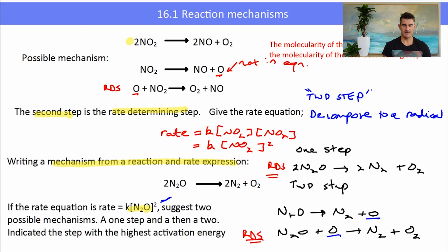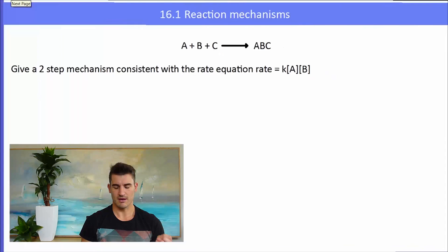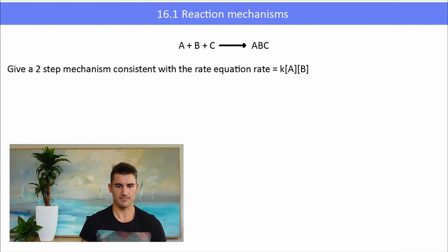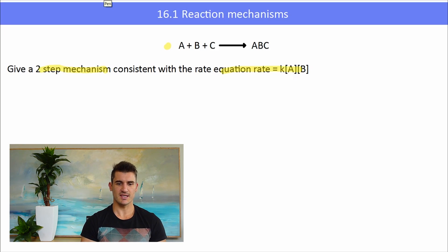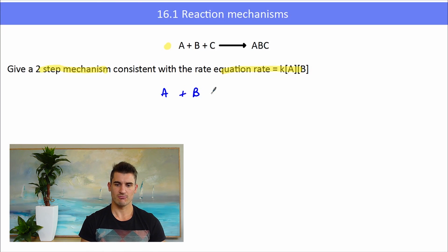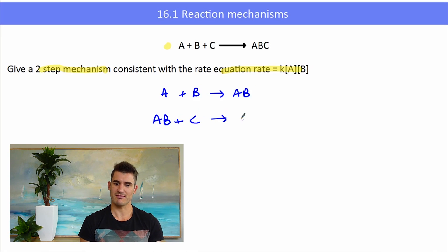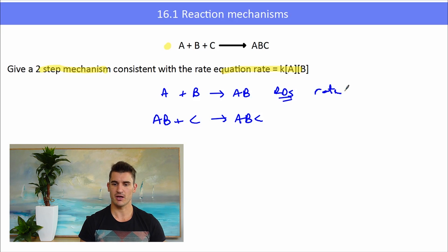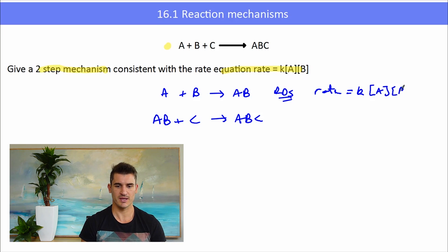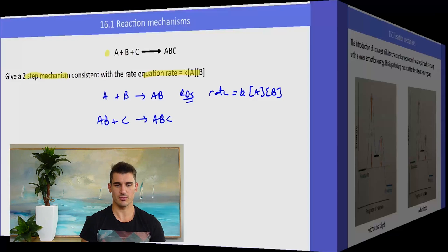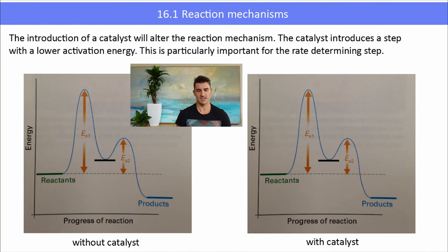If we were to write the rate equation for this, it would be rate equals K times NO squared. For the reaction A plus B plus C going to ABC, we need to write a two-step mechanism consistent with rate equals K times the concentration of A times the concentration of B. We form an intermediate: A plus B goes to AB — that is the rate determining step, giving rate equals K times concentration of A times concentration of B. Then in the second step, AB reacts with C to form ABC.